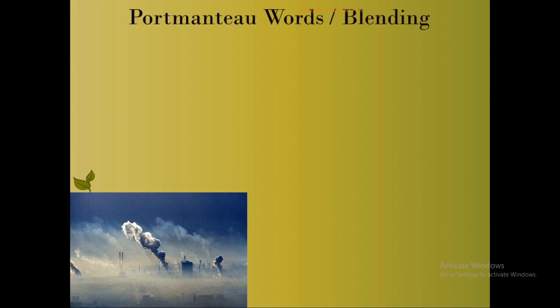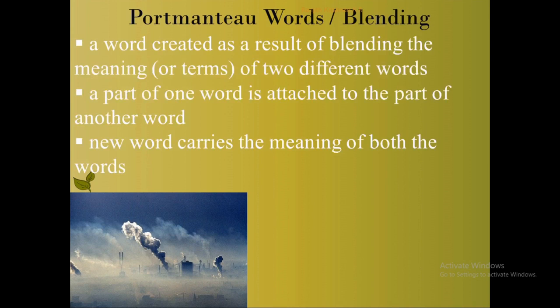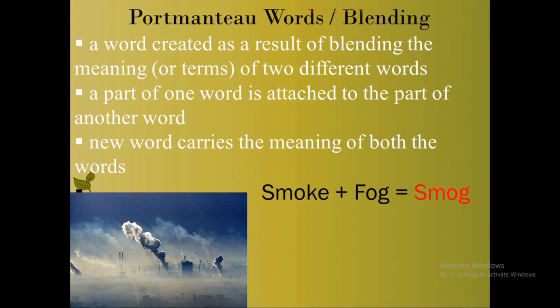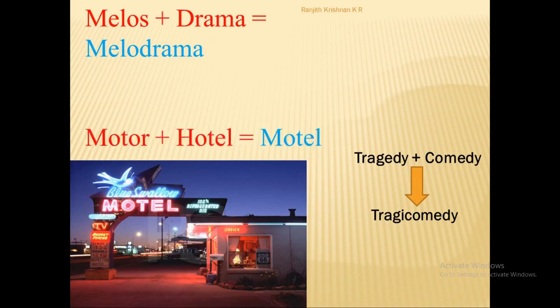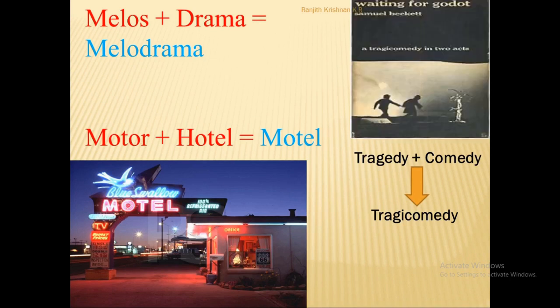The next process is portmanteau words, sometimes also referred to as blending, where two words are combined and blended together to produce another word — a word created by blending the meanings of two different words. Part of one word is attached to part of another, and the new word carries the meaning of both. For example, combining 'smoke' and 'fog' gives us 'smog.' Other examples include 'melodrama' (from melos and drama), 'motel' (motor plus hotel), and 'tragicomedy' (tragedy plus comedy).